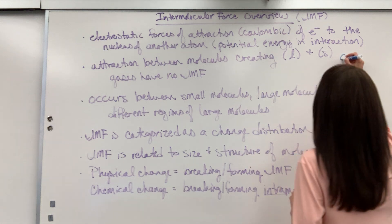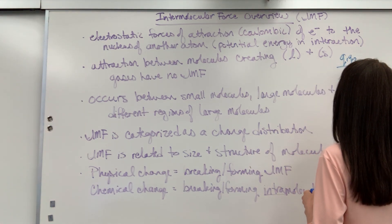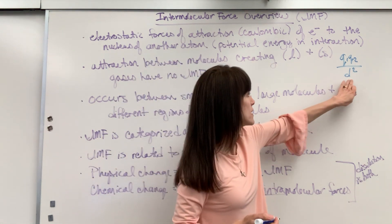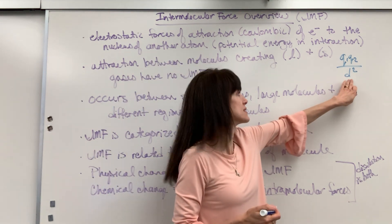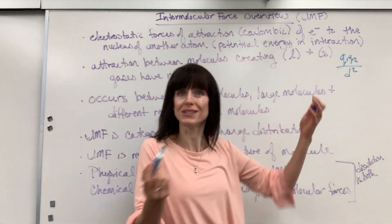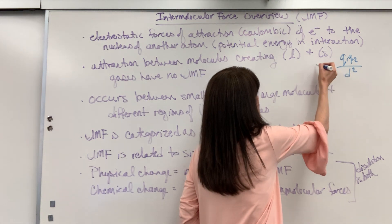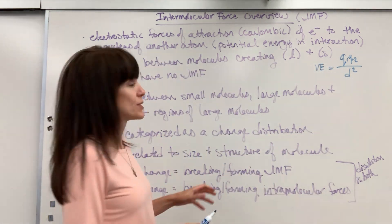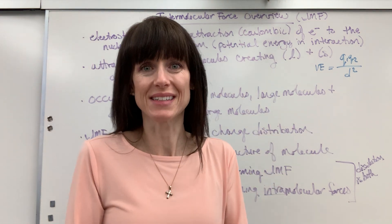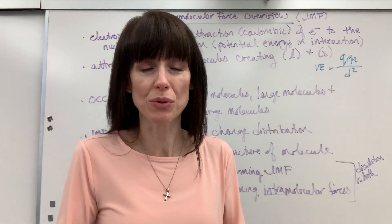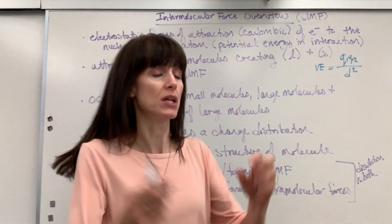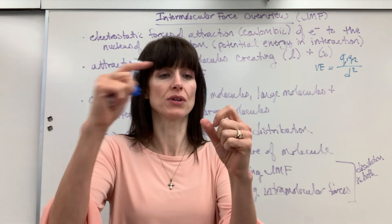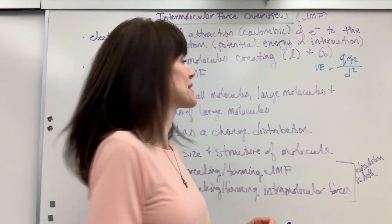Let's write that down: Q1 times Q2 divided by D squared. The closer those molecules are together, the smaller the distance, the larger the quotient, which is your potential energy — VE would be your potential energy right there. So it's going back to physics, back to Coulomb's law and that potential energy. Atoms are attracted one to another because the electrons of one are attracted to the protons of another atom.